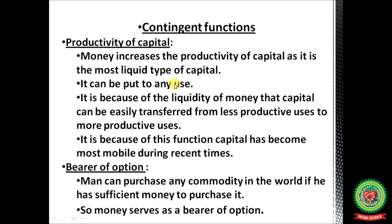With money, I can purchase machinery, land, pay wages to laborers, and make payments for raw materials. It is because of the liquidity of money that capital can be easily transferred from less productive to more productive uses — this is why capital has become most mobile in recent times. Bearer of options: money determines the purchasing power of a person. If I have enough money, I can purchase an aeroplane — that means I am the bearer of the option.